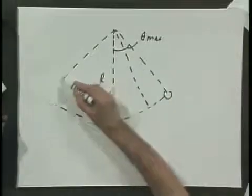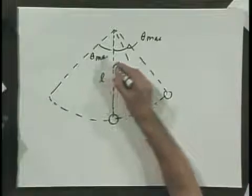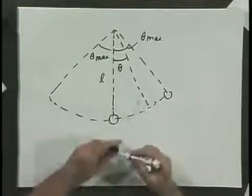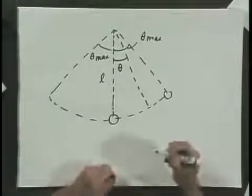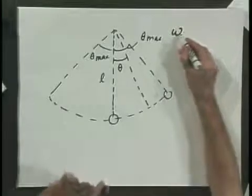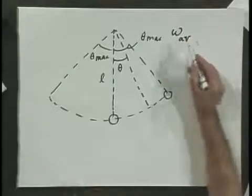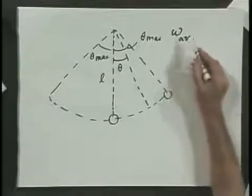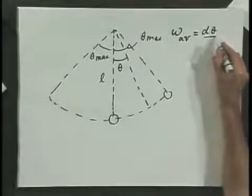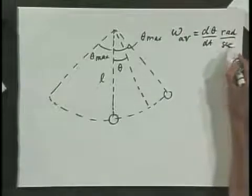On the other side there is also a theta maximum. I assume there is no damping, and the current angle is theta. The angular velocity, for which we write omega, I will put 'AV' there so you always know which omega I'm talking about. Angular velocity, by definition, is dθ/dt, and this is in radians per second.